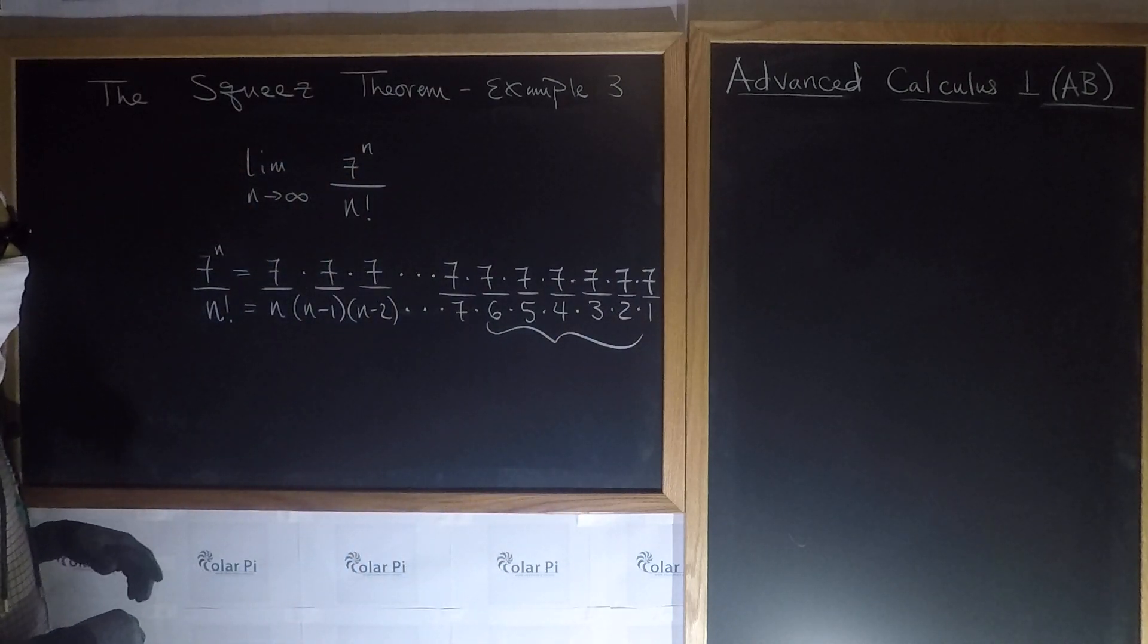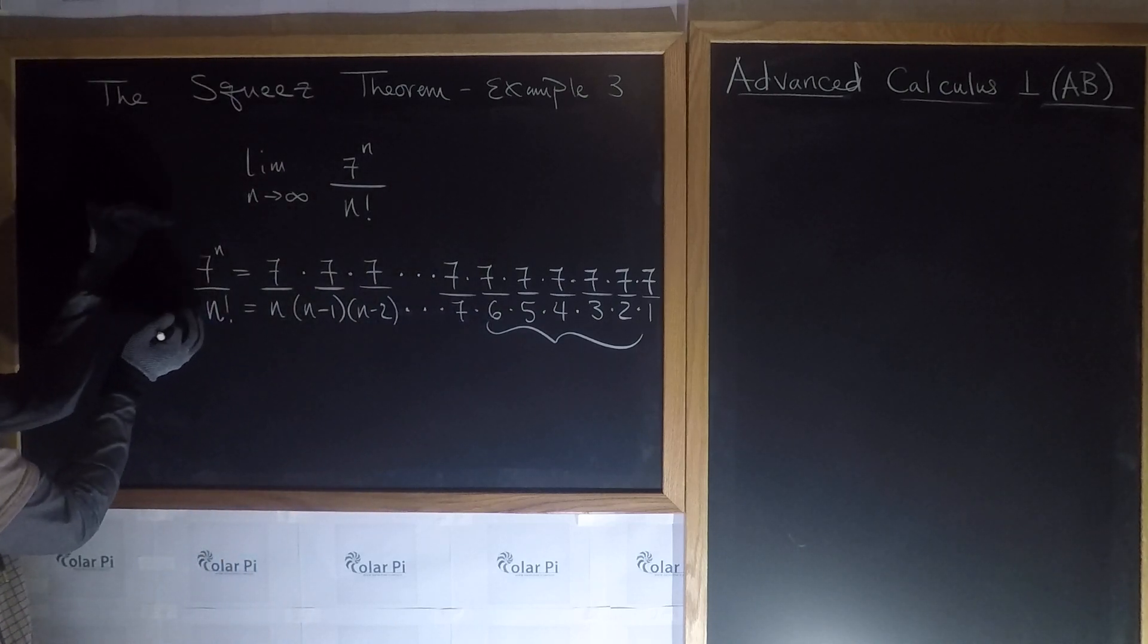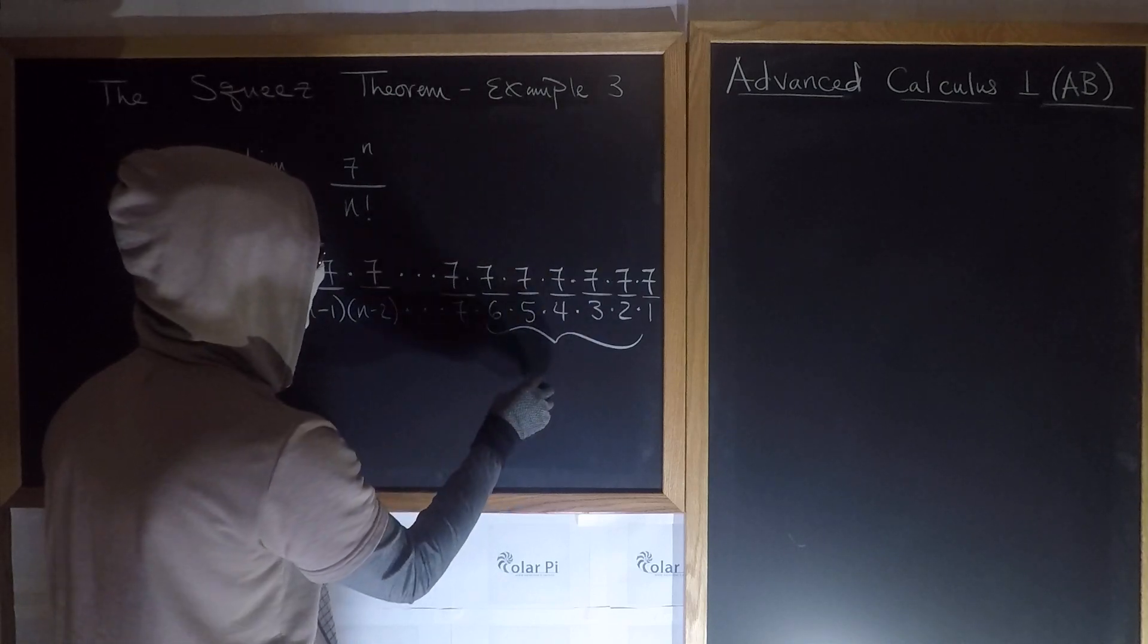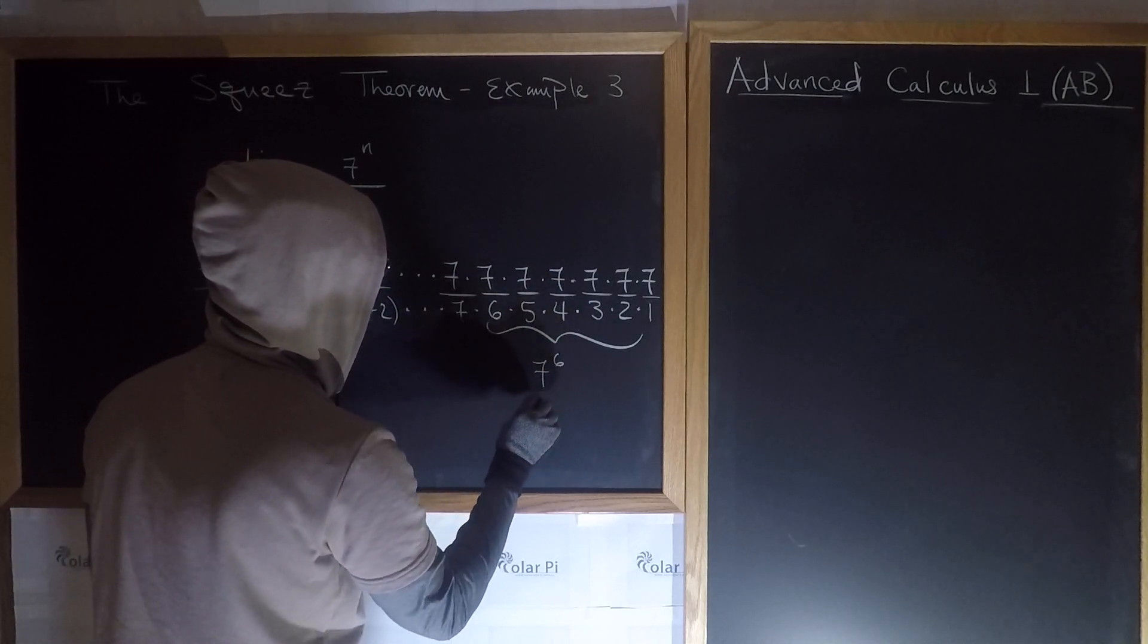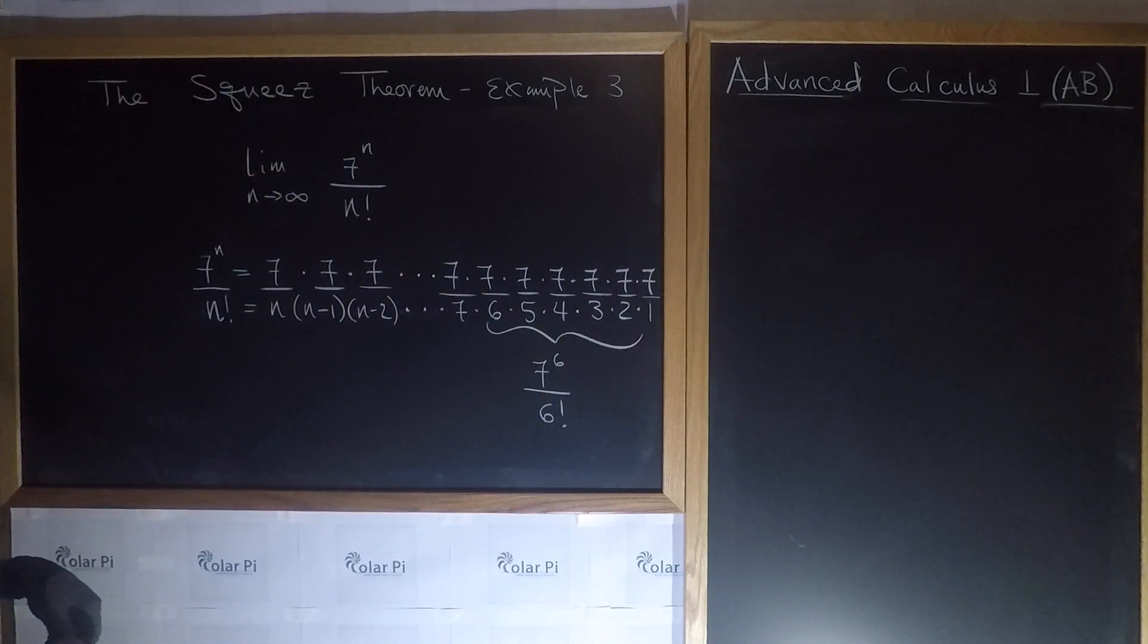And so that's to say that let's work with this and figure out how to bound this without tampering with this. Now, how can we succinctly write this? It's 7 to the 6 over 6 factorial. That's what I've underlined here. It's 7 to the 6 over 6 factorial.